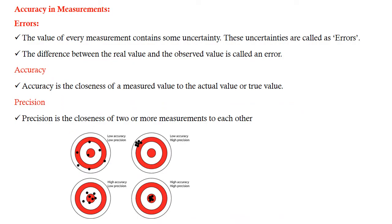Accuracy in measurements - Errors: The value of every measurement contains some uncertainty. These uncertainties are called errors. The difference between the real value and the observed value is called an error. Accuracy is the closeness of measured value to the actual value or true value. Precision is the closeness of two or more measurements to each other.